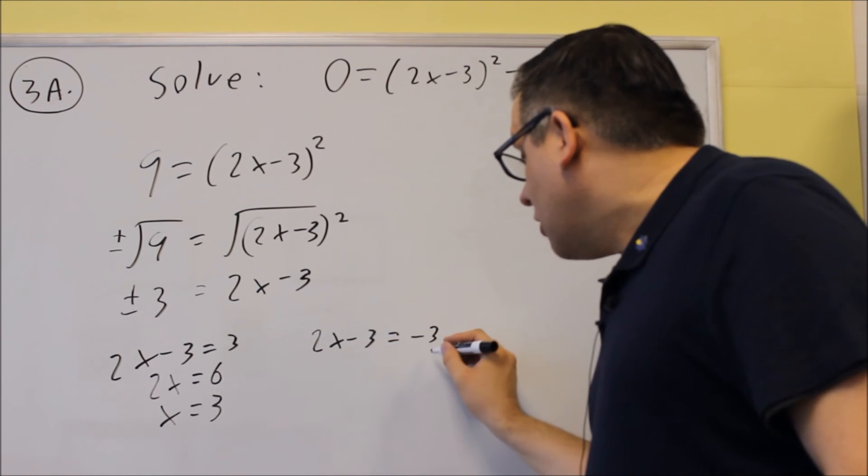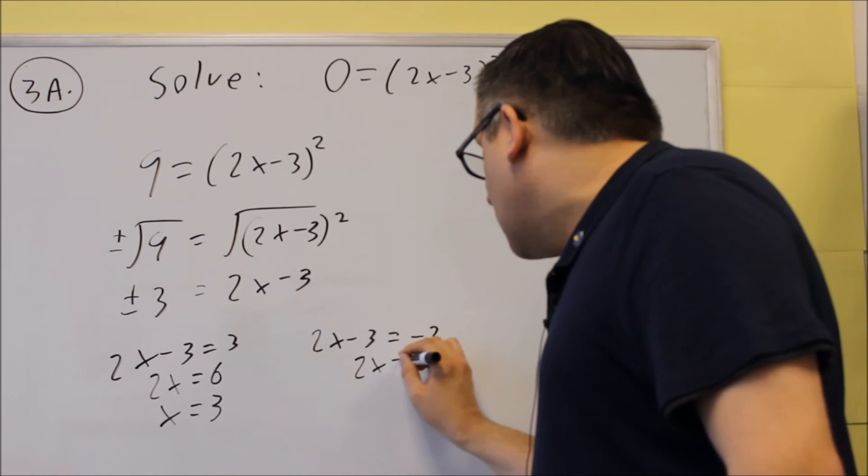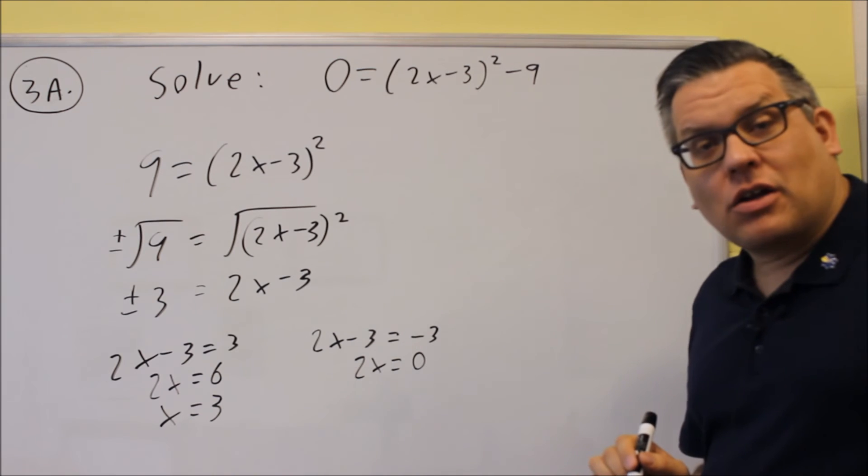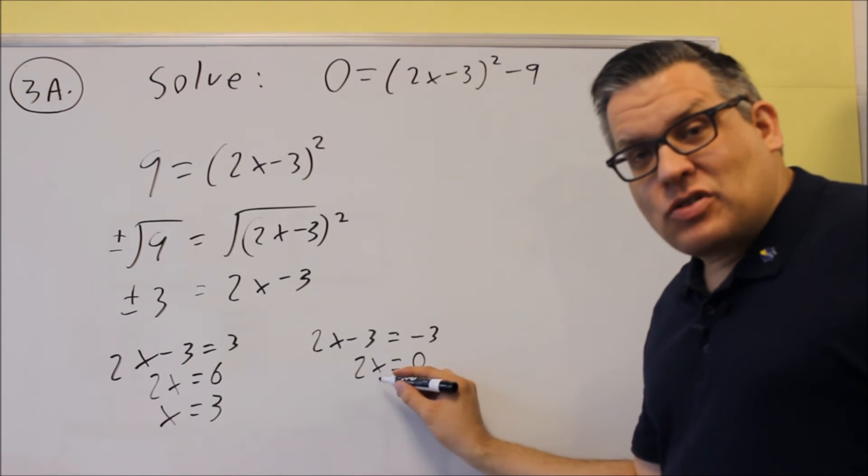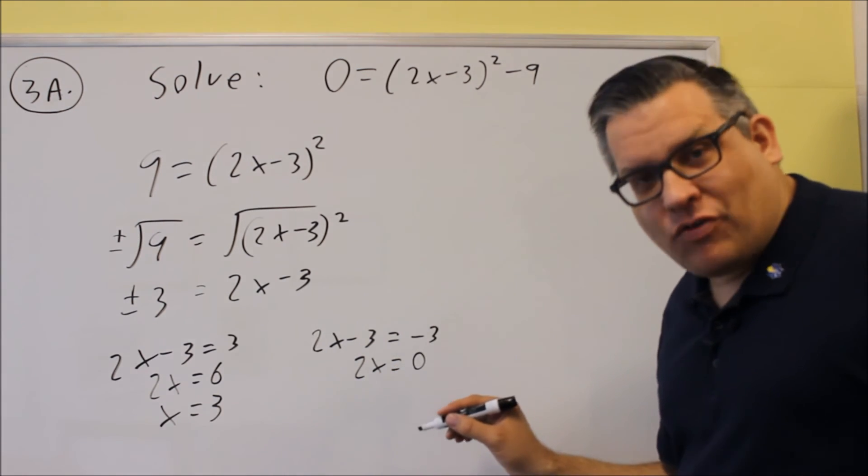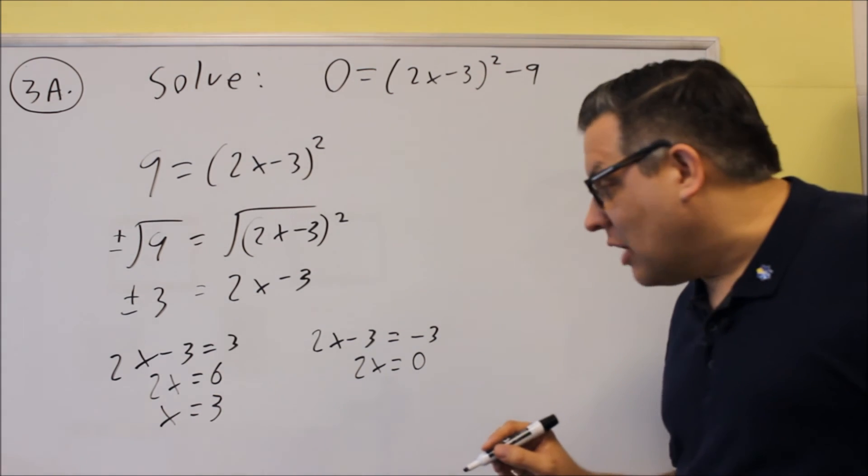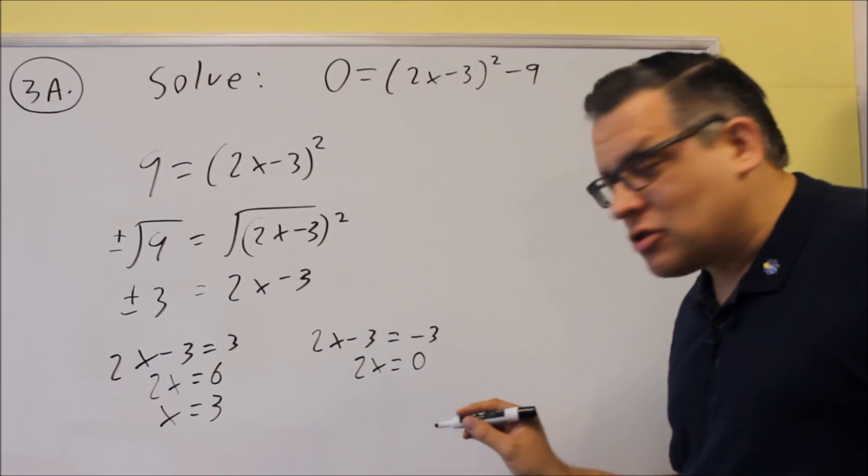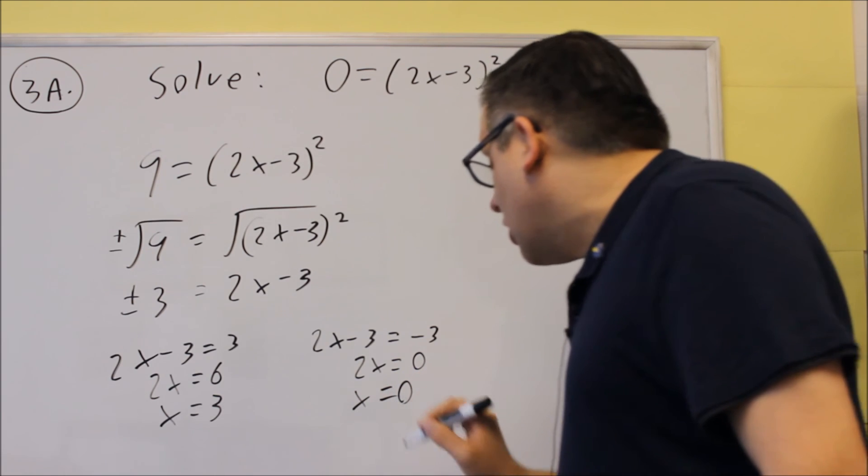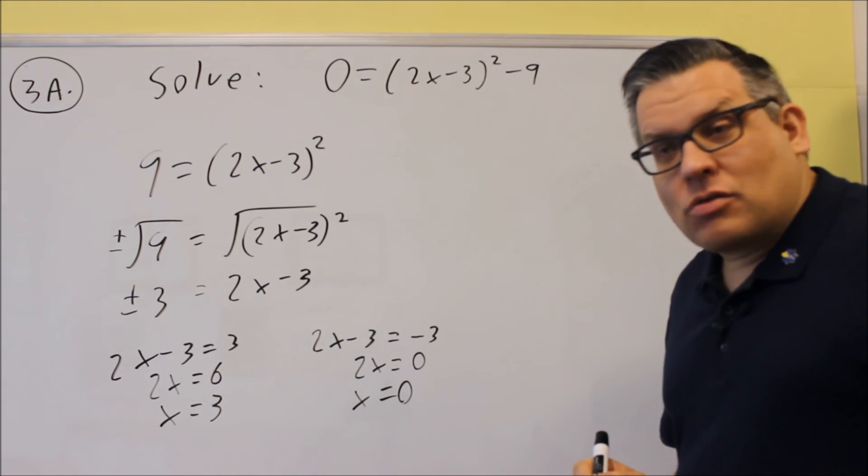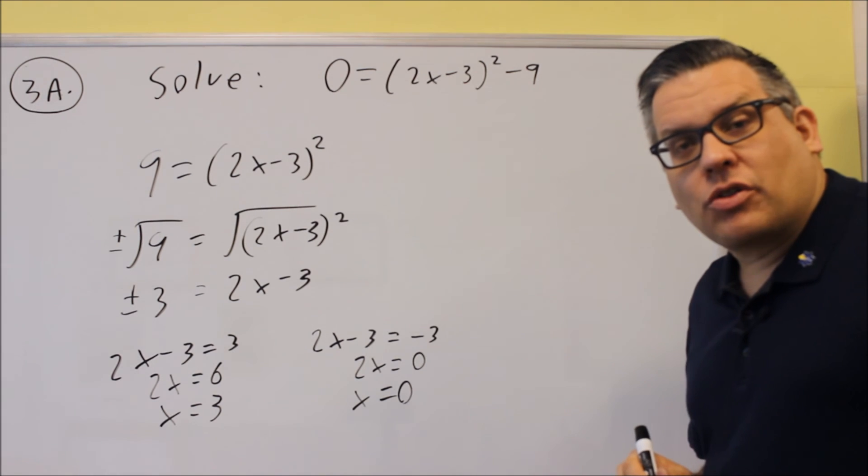The other one, if we add 3 to both sides, we actually get a 0 on this side. Now, you're dividing both sides by 2, so it's not going to be undefined. You're not dividing by 0 in this case. You're going to get 0 for your answer. So for this one, the two answers would be 0 and 3.